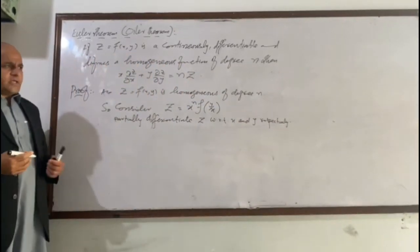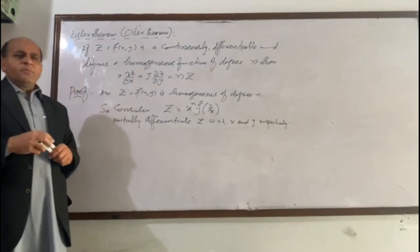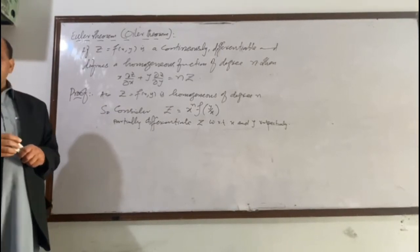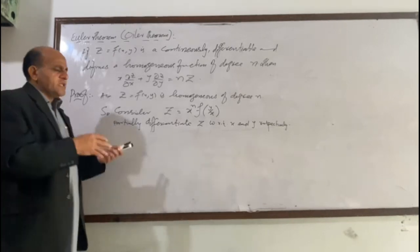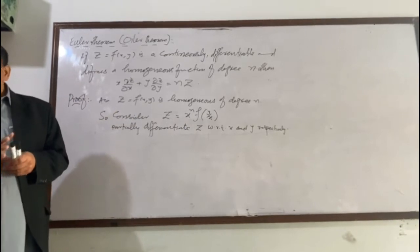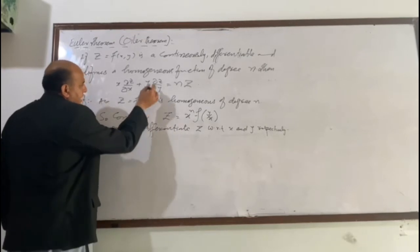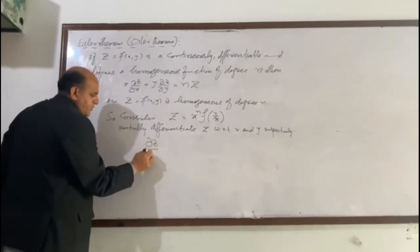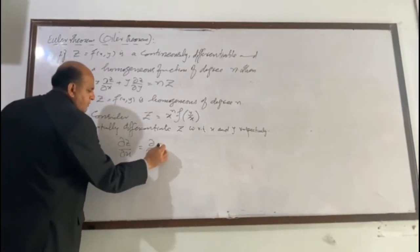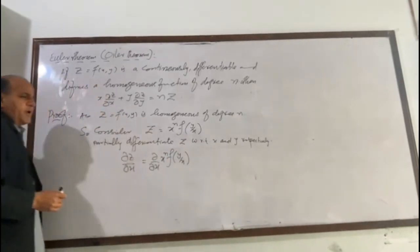First we will differentiate with respect to x, then with respect to y. Whenever we differentiate a function with respect to x, we treat y as a constant. Whenever we differentiate with respect to y, we treat x as a constant. So, first we find ∂z/∂x by applying the partial derivative to both sides. We have z = x^n · f(y/x).